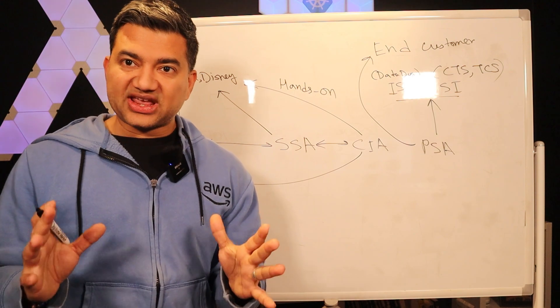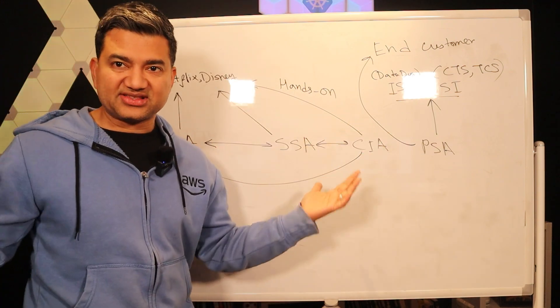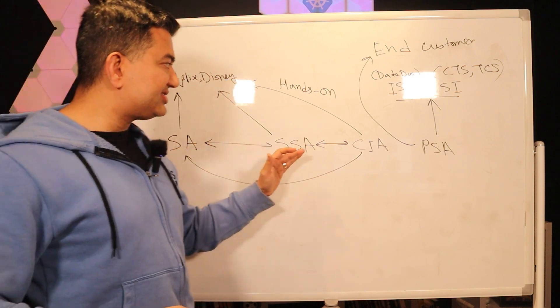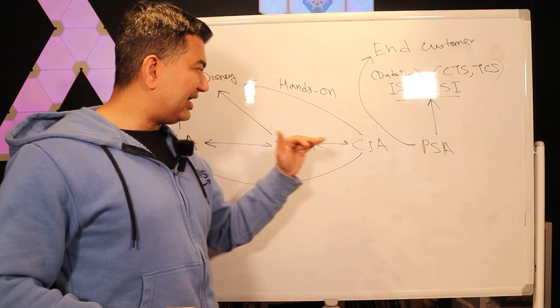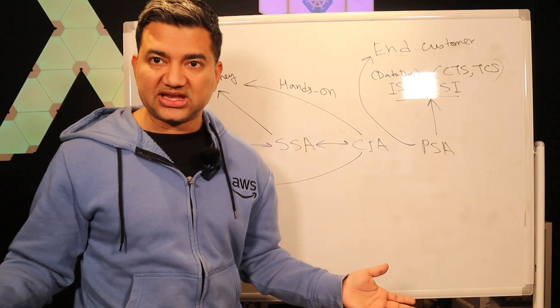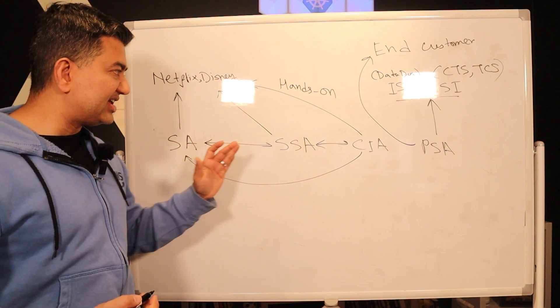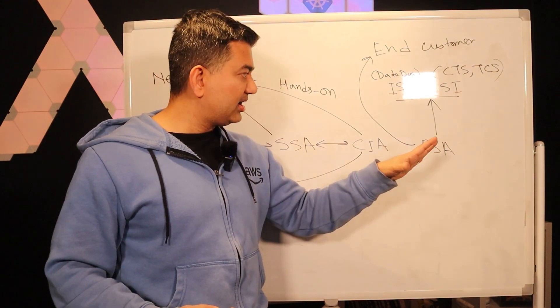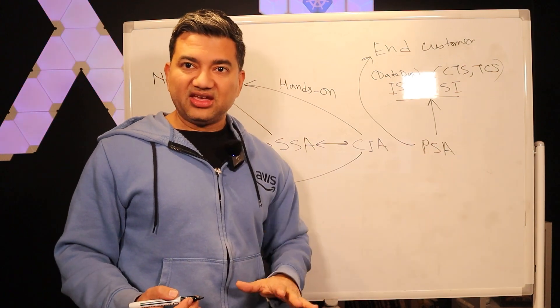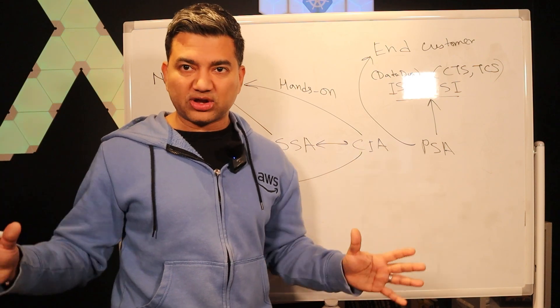So the next question I get is the salary. Which has the highest salary or what is the range? All these four solutions architects are in the solutions architecture family. So whether you are a regular SA, Specialist SA, CIA, or PSA, the band for the level is same for the same location.